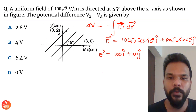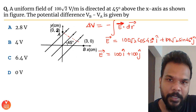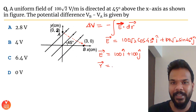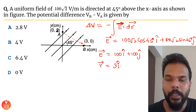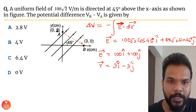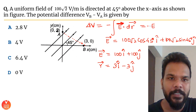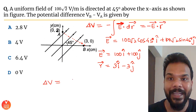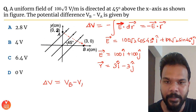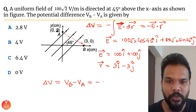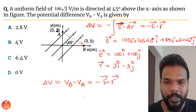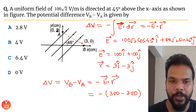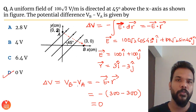The charge particle moves from point A to B. The displacement vector r is (3−0)î + (0−3)ĵ = 3î − 3ĵ. Since it's a uniform field, we calculate VB − VA = −E·r directly. The dot product gives −(300 − 300) = 0, so the potential difference comes out to be zero. Option B is correct.